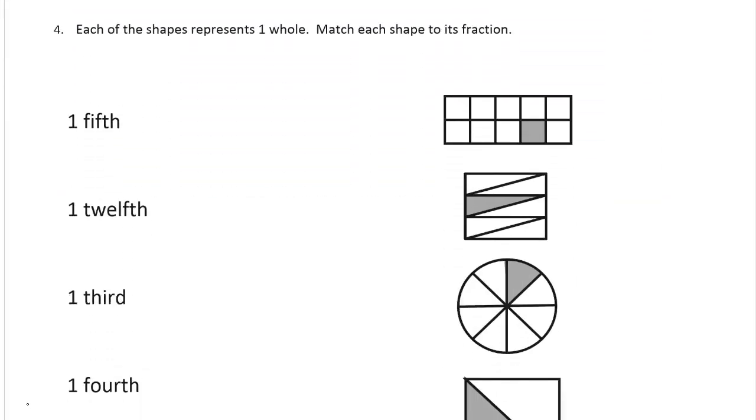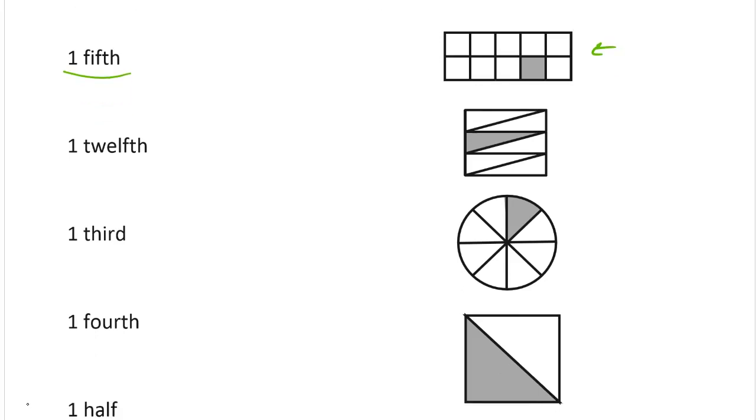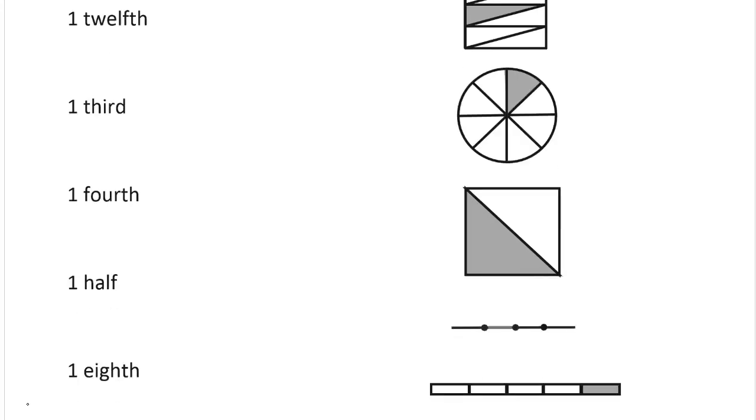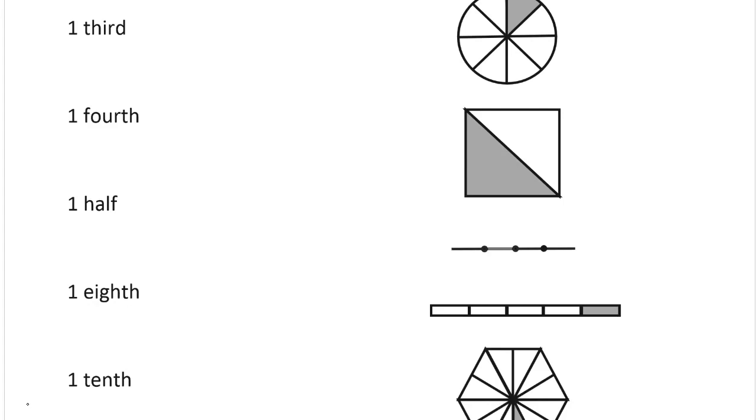Each of the shapes represents one whole. Match each shape to its fraction. So one fifth is going to be one out of five of the parts shaded. So let's see. This has more than five. So it can't be a fifth. The next one also has more than five pieces. This circle has, it looks like eight pieces. Those can't be fifths. This square has halves. The line has fourths.